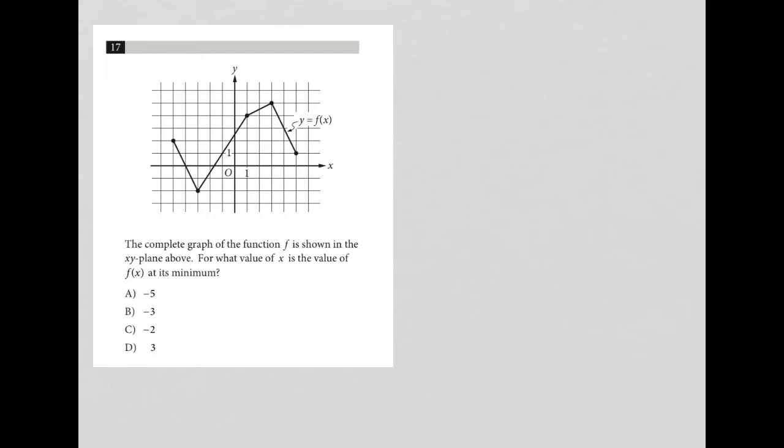So this question is a graph question. What we have provided here is just the graph itself. We have some ordered pairs at these points here. So always pay attention to where your ordered pairs are located. The graph is not fully fleshed out.